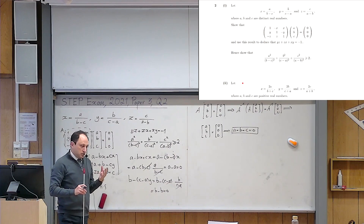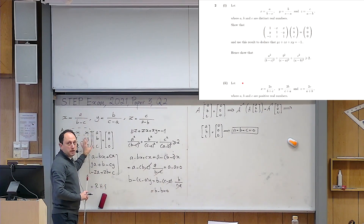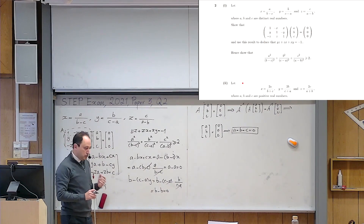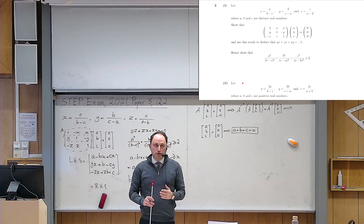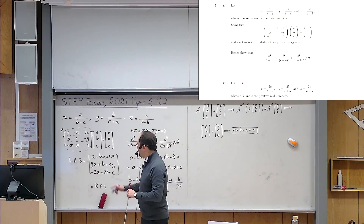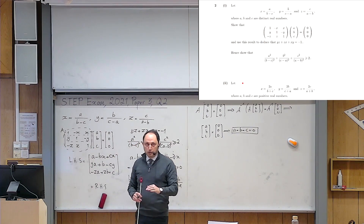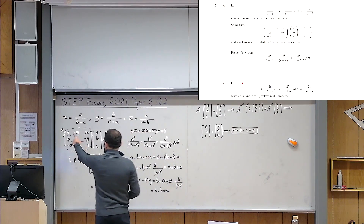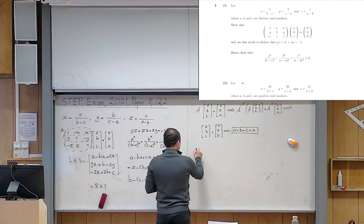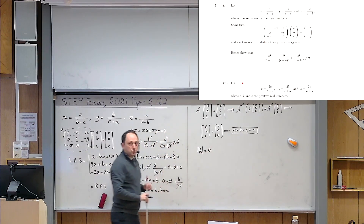Since A is not invertible, its determinant must equal 0. A matrix is invertible if and only if its determinant is nonzero, and we've established A cannot be invertible, so det(A) = 0. I will now calculate the determinant of this matrix.